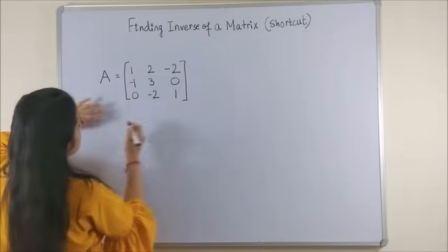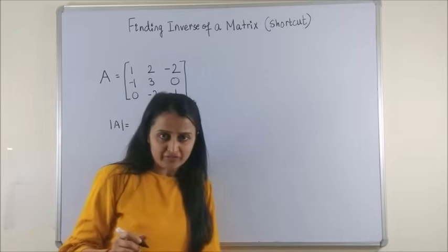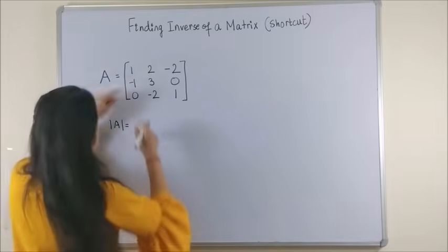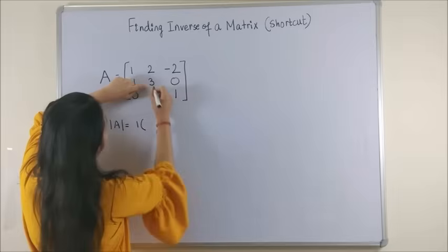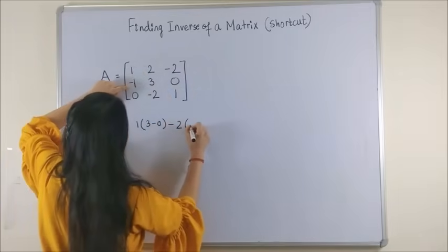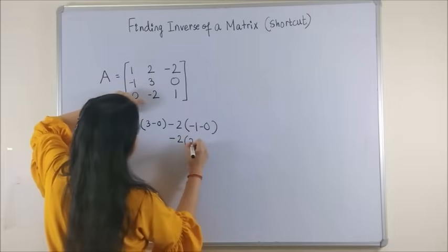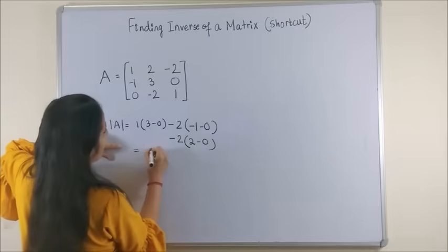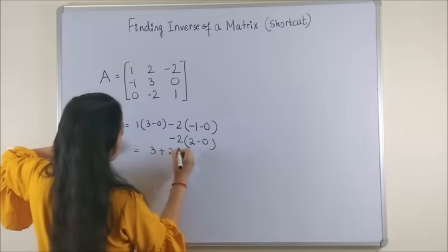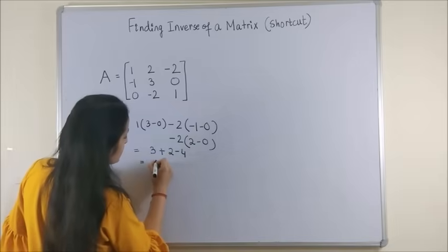Now given this matrix, the first thing is finding your conventional determinant of A using your normal method. So here it is 1 into 3 minus 0, minus 2, minus 1, minus 0, minus 2, 2, minus 0. This gives us 1.